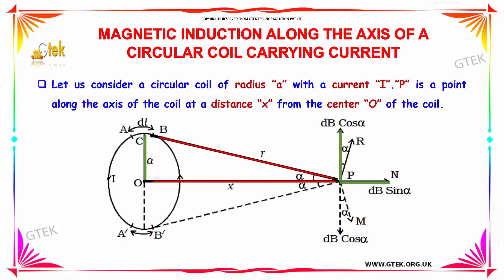Let's move on to the magnetic induction along the axis of a circular coil carrying current. Let us consider a circular coil of radius A with the current I. P is the point along the axis of the coil at a distance x from the center O of the coil.